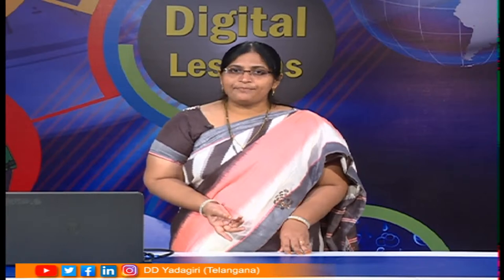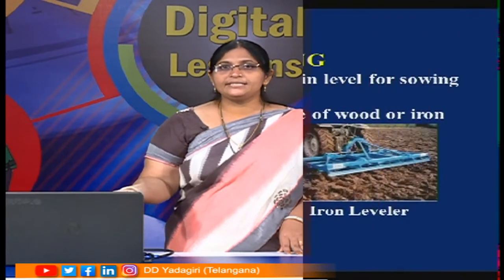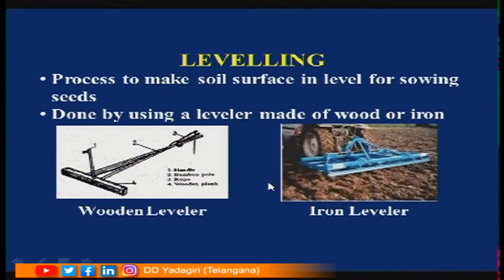Preparation of soil includes two stages: ploughing and levelling. After ploughing, the soil surface will have ups and downs. To make the soil surface level, it is done with a machine called a leveller — either made up of wood or iron.